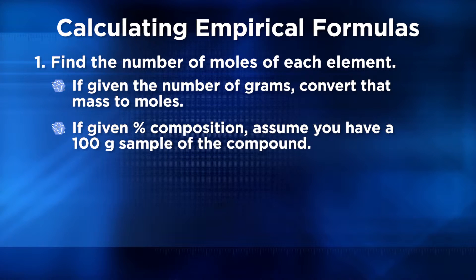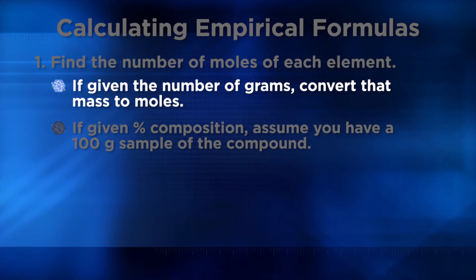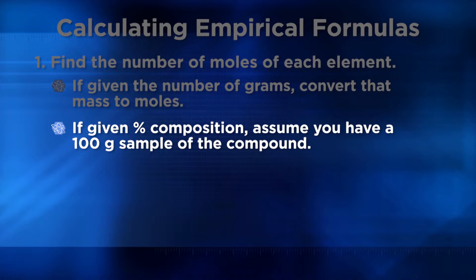The steps for determining an empirical formula are very closely related to the procedure for percent composition. In both cases, you're examining the ratio of elements in a compound. The first step is to determine how many moles there are of each element. If the number of grams of each element is given, simply convert those masses to moles. If percent compositions are given, assume there are 100 grams of the compound, which enables us to change those percentages to masses in grams.